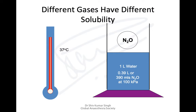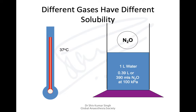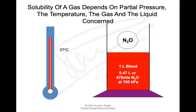In the case of nitrous oxide at 37°C (body temperature), the amount of nitrous oxide dissolved in water is 390 mL, whereas nitrogen was only 14 mL. If we change the liquid phase from water to blood, the amount of nitrous oxide dissolved in one liter of blood at 37°C is 470 mL — compared to 390 mL in water. So the solubility of a gas depends not only on partial pressure and temperature, but also on the liquid concerned.